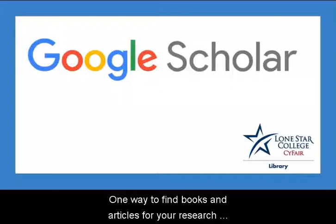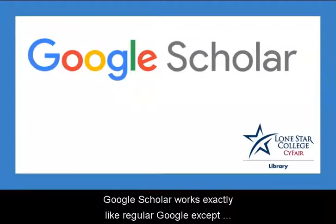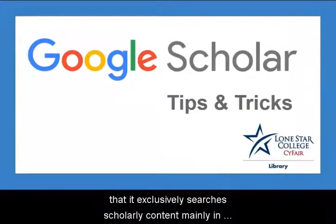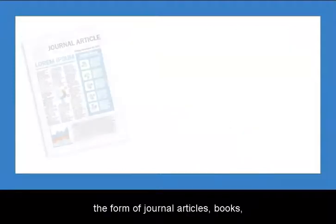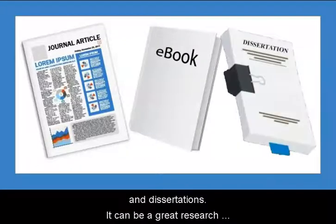One way to find books and articles for your research projects is to use the search engine Google Scholar. Google Scholar works exactly like regular Google except that it exclusively searches scholarly content, mainly in the form of journal articles, books, and dissertations.